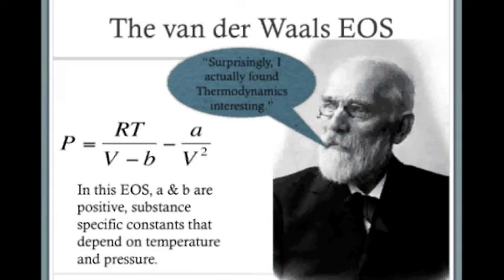J.D. Van der Waals proposed the first cubic equation of state back in 1873. In this equation of state, A and B are positive substance specific constants that depend on temperature and pressure. You can see that we cannot explicitly solve this equation for V, so cubic equations of state must be solved using iterations.